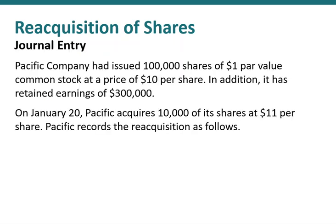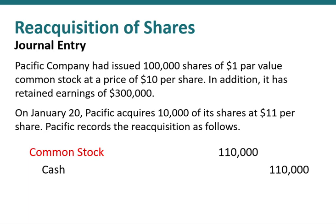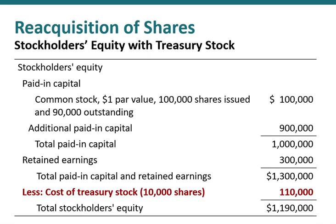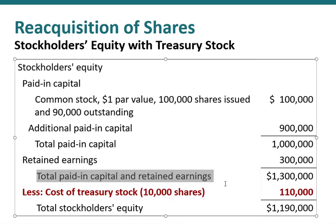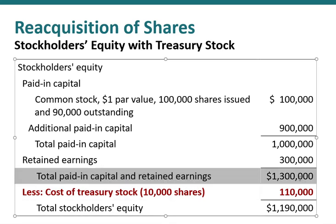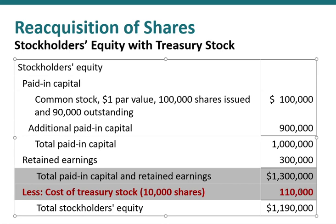The Pacific Company has 100,000 shares of one dollar par value common stock outstanding and on January 20th decided to reacquire 10,000 shares at eleven dollars per share. Essentially we're reducing our cash and common stock outstanding, but rather than debiting common stock, we debit a contra account called treasury stock. Treasury stock reduces stockholders equity. As we can see on this balance sheet, our total paid-in capital and retained earnings is $1.3 million, then we deduct treasury stock to get total stockholders equity of $1,190,000.